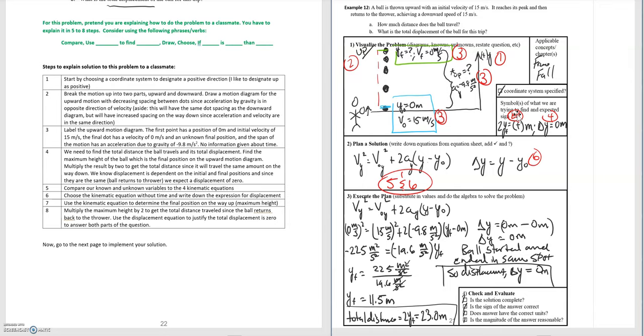Moving on to step 7, use the kinematic equation to determine the final position on the way up, the maximum height. That's where we used our kinematics equation. We started from our known equation and then we substitute in all of our variables and we determine a final position of 11.5 meters. So it reaches a maximum height of 11.5 meters. This is step 7 getting to this point here.